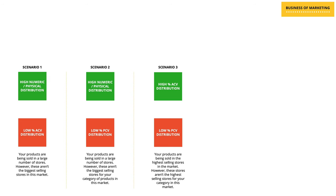Scenario three gets a little more interesting. We see a situation where there is high percentage ACV distribution but at the same time low percentage PCV distribution. This means that your products are being sold in the stores which are the highest selling stores in the market. However, these same stores aren't the highest selling stores for your category of products. So even though you might be present in the biggest stores in the market, these stores are probably not too relevant for your category, and you need to find a way to get your products into the stores which are important for your category.